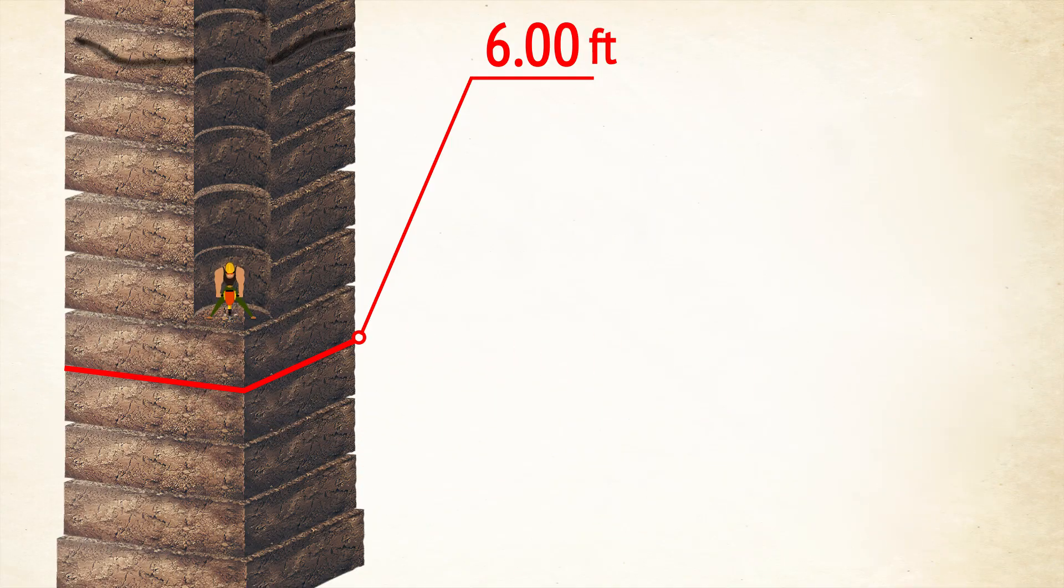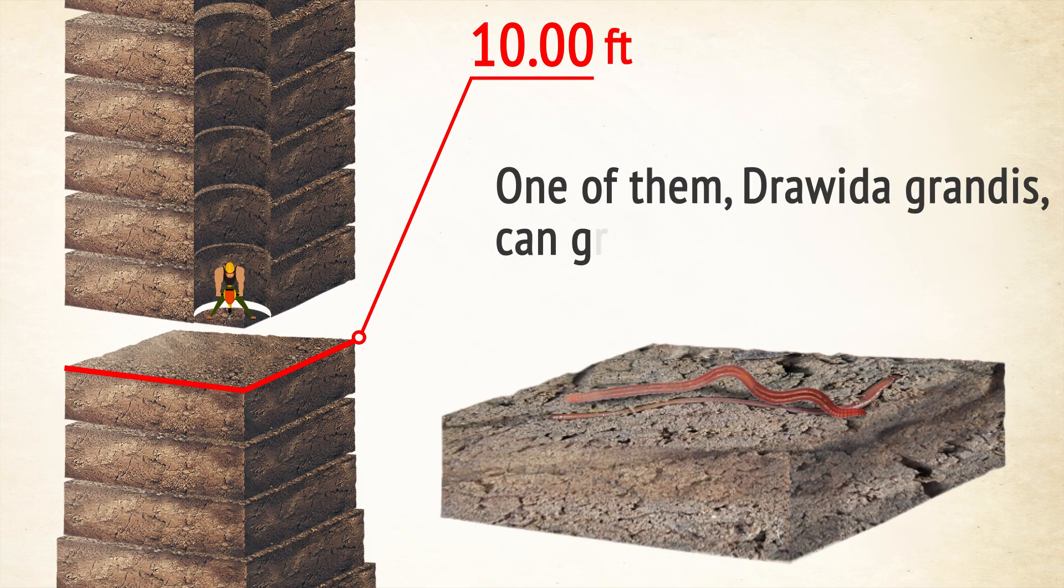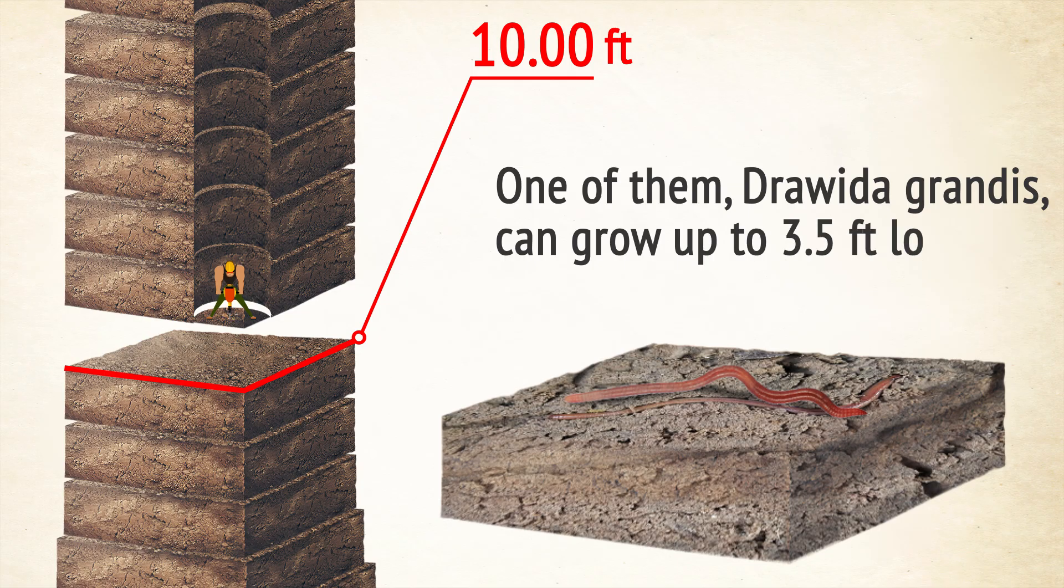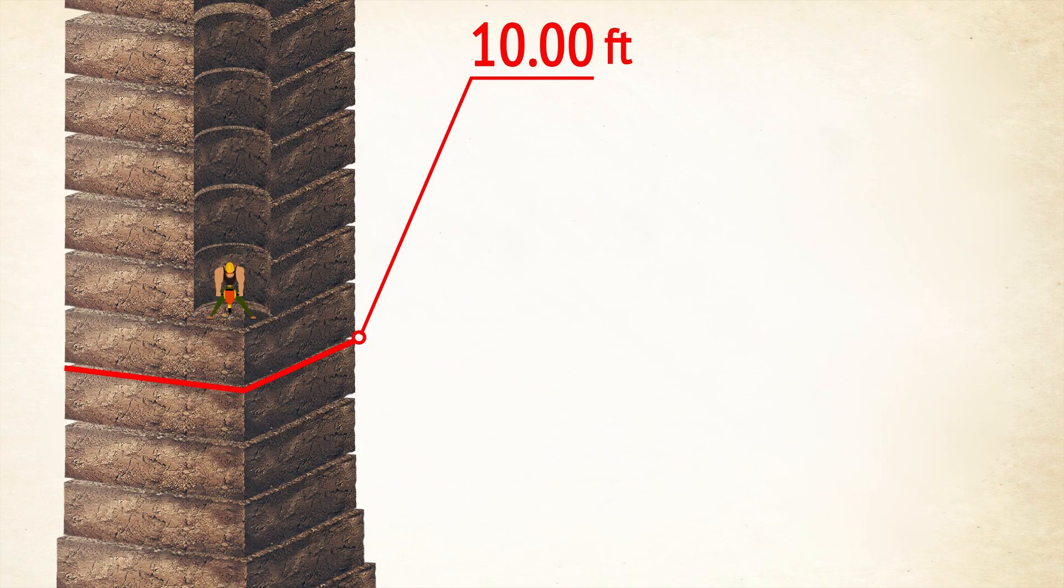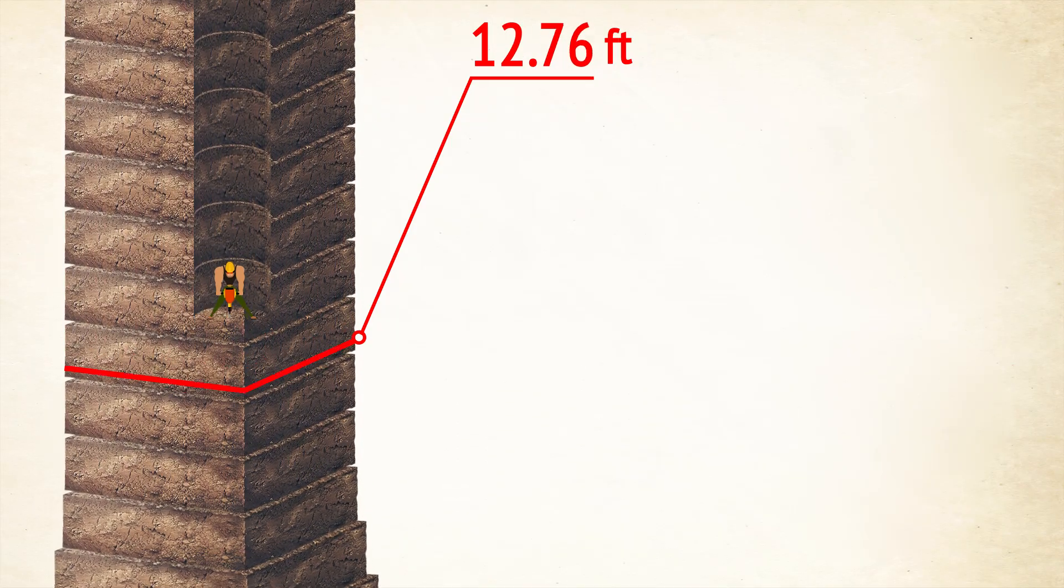Deep burrowing species of earthworms can be spotted at a depth of 10 feet. One of them, Drawida grandis, can grow up to 3.5 feet long. Gigantic worms haven't managed to scare us, so we're digging further down.